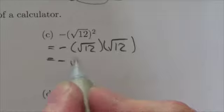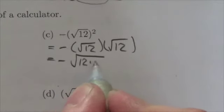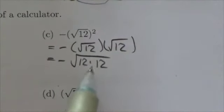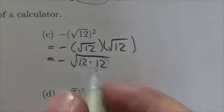So this will be negative, and when you multiply two radicals together, you multiply the radicands together. Because there are two 12s in there, I can take out a factor of 12.